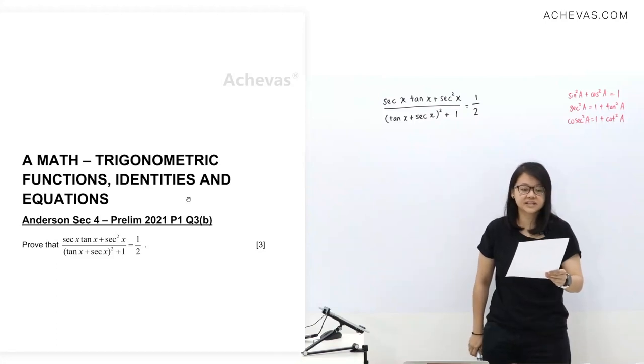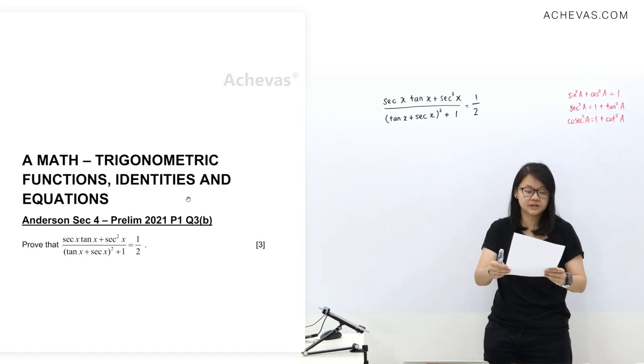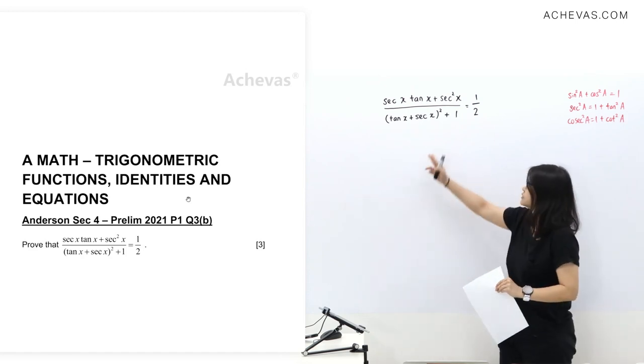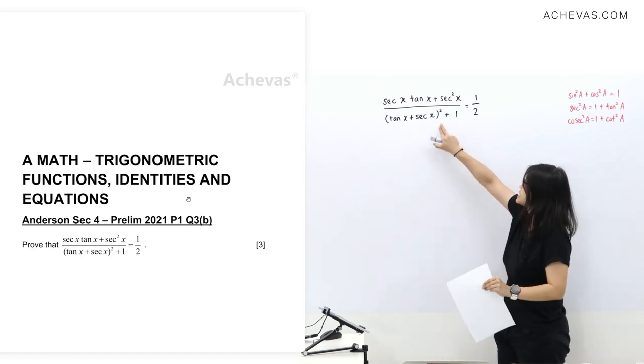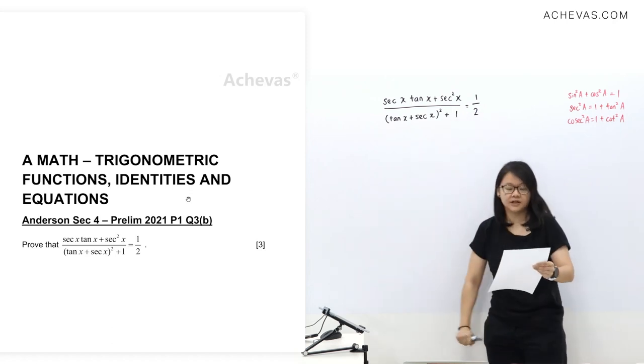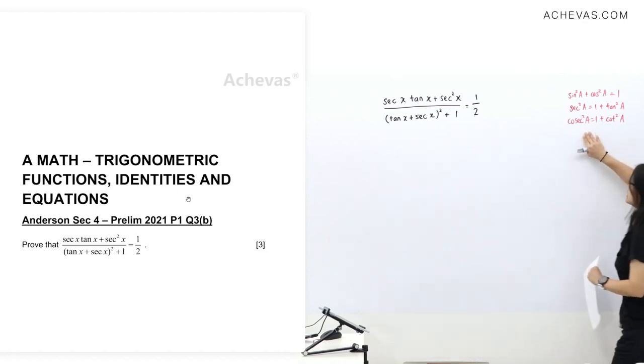Now we're going to take a look at Anderson Sec 4 Prelim 2021 Paper 1 Question 3b. This proof is going to be very long, so let me read it. This whole expression equals to half. I've written down the formula that you can use here for trig identity.